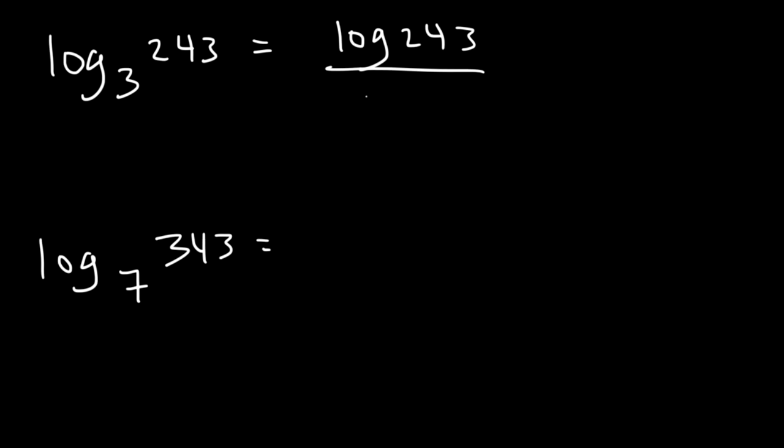So let's divide log 243 by log 3. The calculator will give you 5. And it makes sense because 3 to the 5th power is 243.